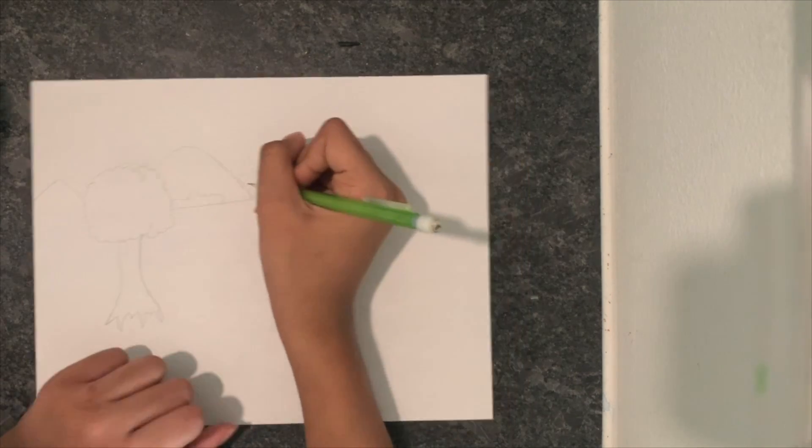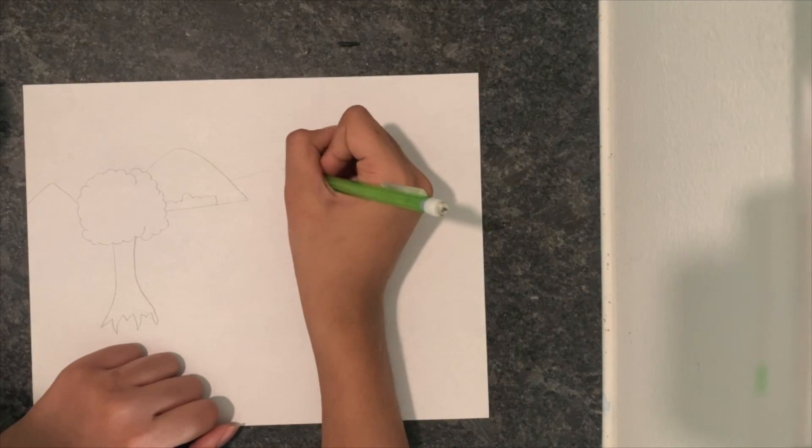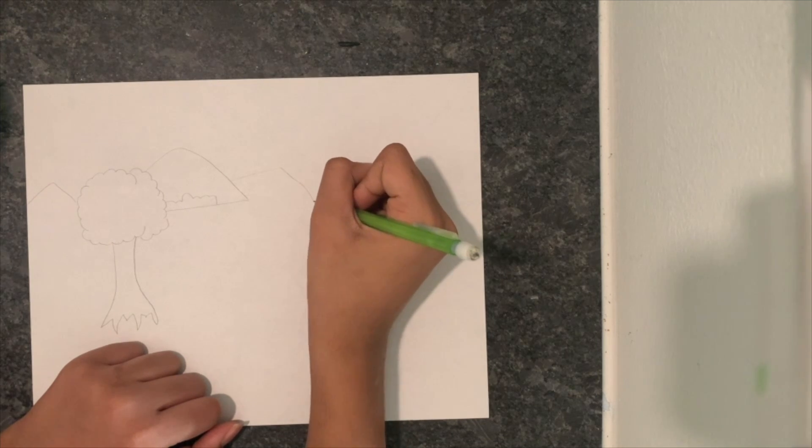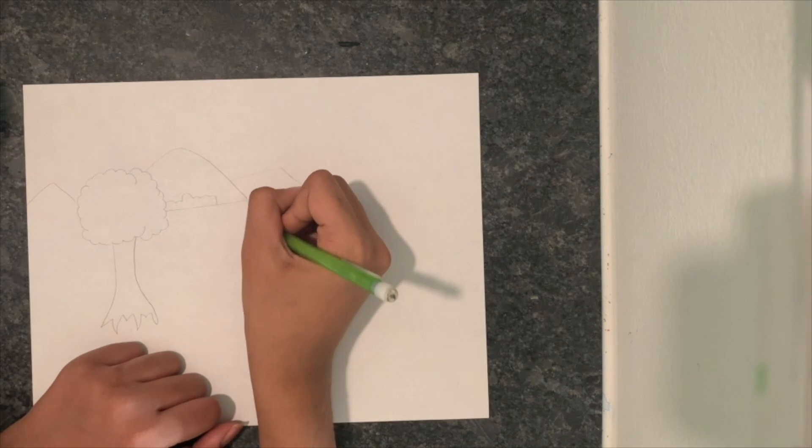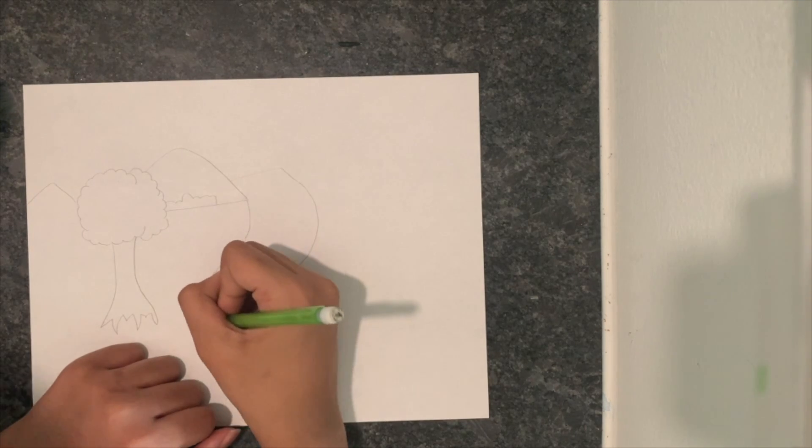I'm also adding some bushes for some extra greenery, but you don't need to do this. Next I drew a slanted line from one of the mountains and drew an S-like structure on my paper. I also did this on the other side to make the river.